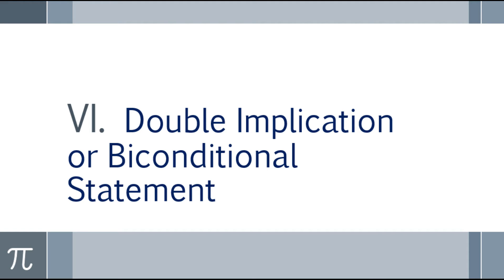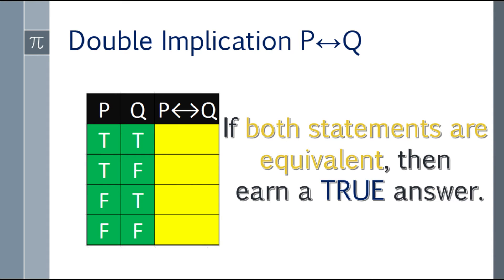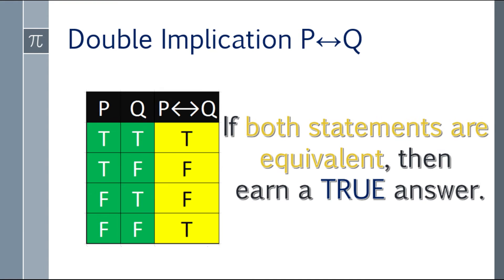Sixth topic: double implication, or biconditional. The logical operator is the double-headed arrow. If both statements are equivalent — both true or both false — then the answer is true. So the first row and fourth row earn true because they are equivalent. The second and third rows earn false because they are not equivalent.